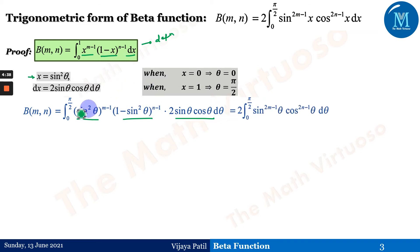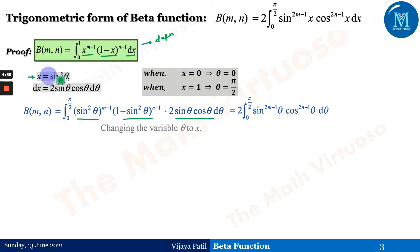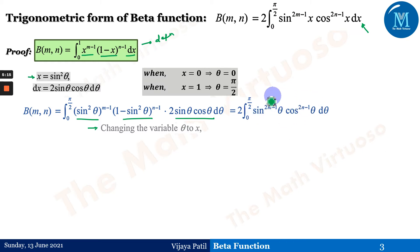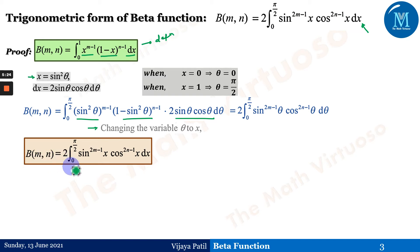After reducing, sin²(θ)^(m-1) and (1 - sin²(θ))^(n-1) with 2 sin(θ) cos(θ) simplifies to 2 times the integral from 0 to π/2 of sin^(2m-1)(θ) cos^(2n-1)(θ) dθ. Replacing θ by x (not a substitution, just relabeling), we get beta(m, n) = 2 ∫₀^(π/2) sin^(2m-1)(x) cos^(2n-1)(x) dx, which is the trigonometric form of the beta function.